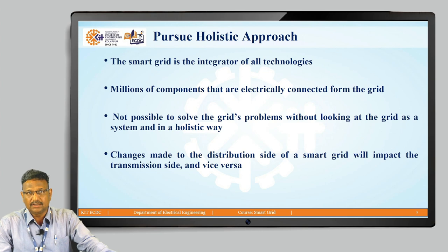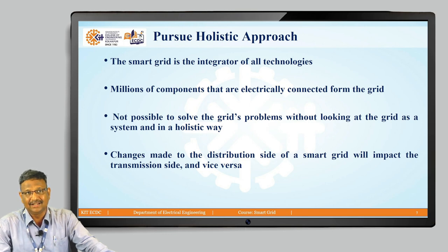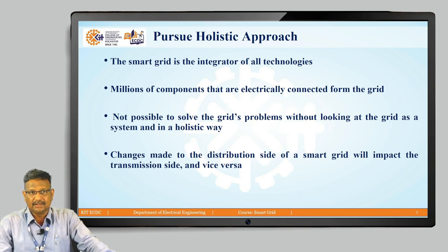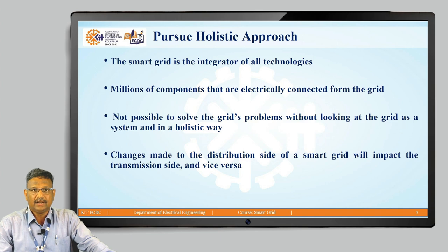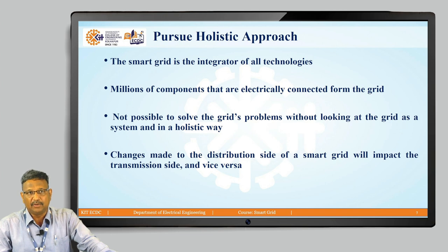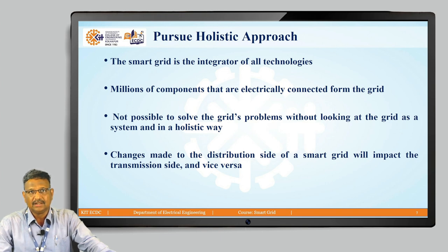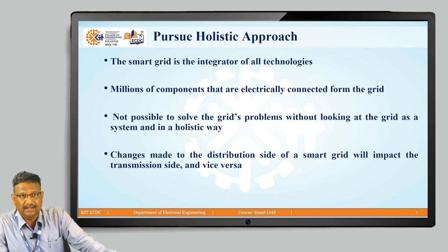When this approach came into the picture, a large number of smart grid integrating systems were needed. The technology must be integrated as a system, because the electricity network is a huge network with millions of components — including circuit breakers, switchgear, relays, transformers, and all electrical machines. Therefore, it is not possible to solve grid problems without looking at the grid as a system in a holistic way.